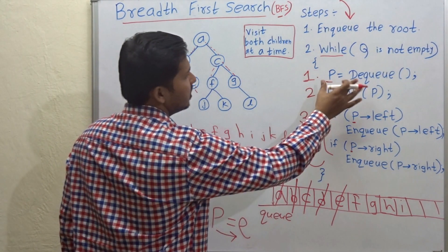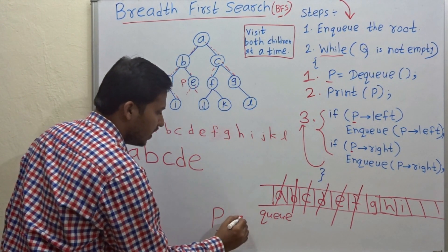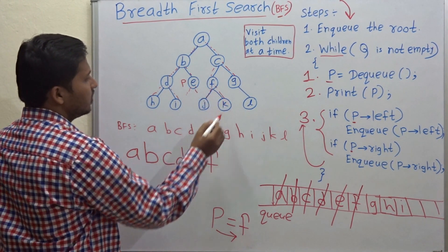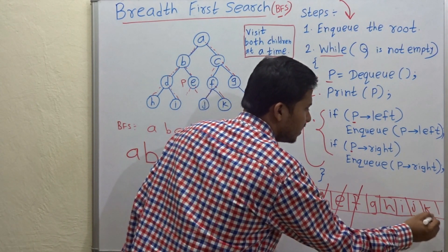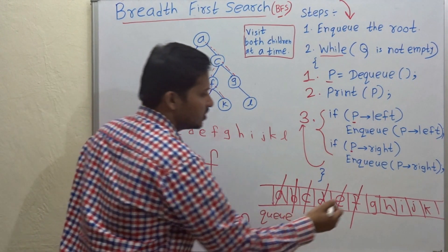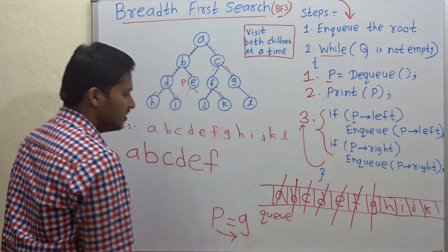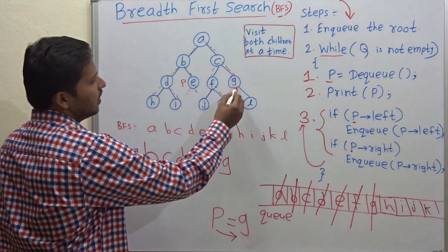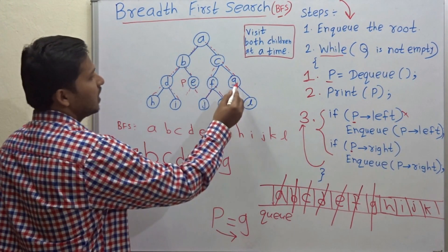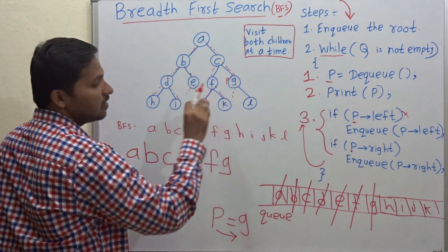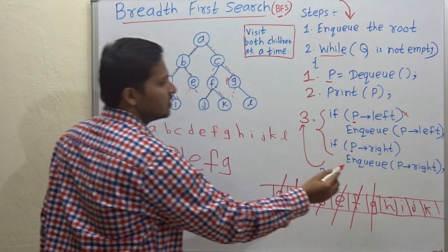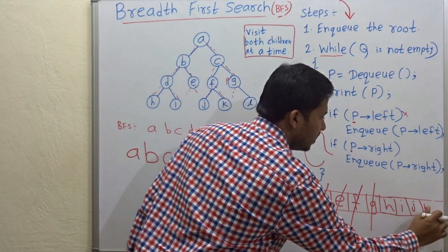Next iteration: dequeue — P is pointing to F. Print F. Check for left and right children of F: left child is J and right child is K, so enqueue J and K. Next iteration: dequeue — P is pointing to G. Print G. G does not have a left child, but it does have a right child which is L, so enqueue L.